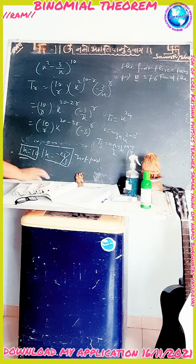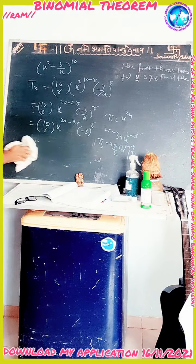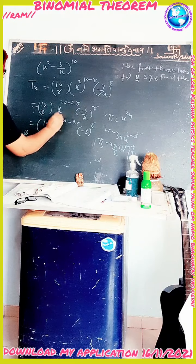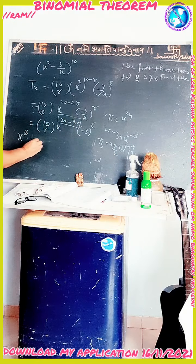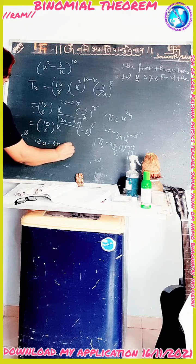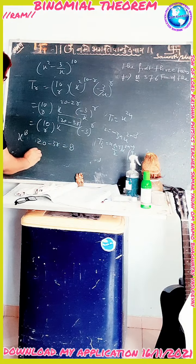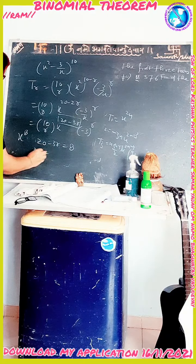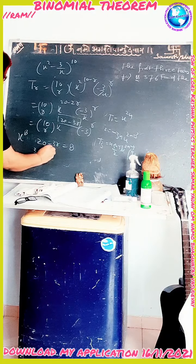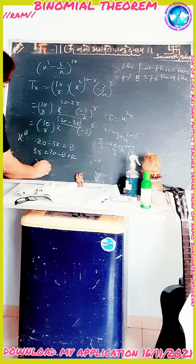To find the coefficient of x^8, we compare the power: 20 − 3r = 8. Therefore 3r = 12, so r = 4.